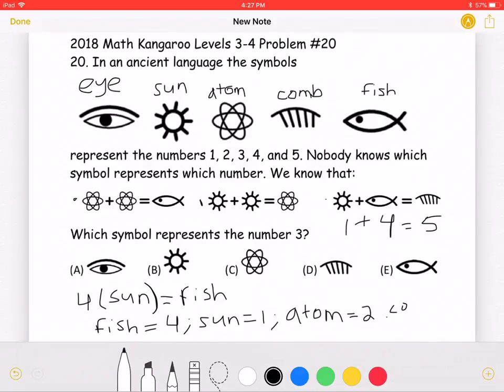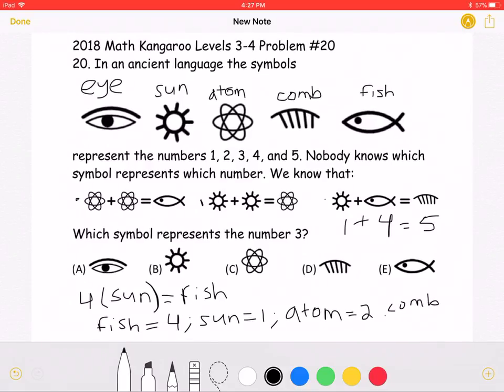This means that the only number left, 3, must be equal to the eye, because that is the only number we have not found out yet.